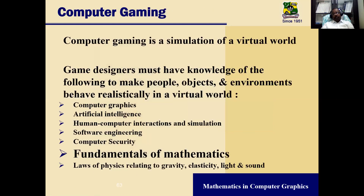Computer gaming is a simulation. Game designers must have knowledge to make people, objects, and environments behave realistically in computer graphics, artificial intelligence, human-computer interactions, and simulation of engineering. They should know the fundamentals of mathematics, the laws of physics relating to elasticity, light, and sound. For example, when designing a tennis game with two people playing on mobile, they should know the principles of gravity and sound propagation from one end to another.